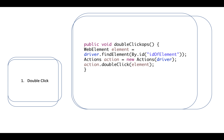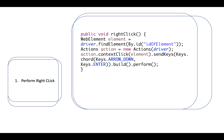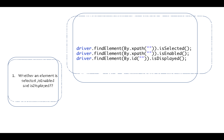How to perform double click: use the Actions class with the doubleClick() method — actions.doubleClick(element).build().perform(). How to right-click: use Actions with contextClick() — actions.contextClick(element).build().perform(). For keyboard actions you can use the Keys class — Keys.ARROW_DOWN, Keys.ARROW_UP, Keys.ENTER, Keys.TAB, Keys.ESCAPE.